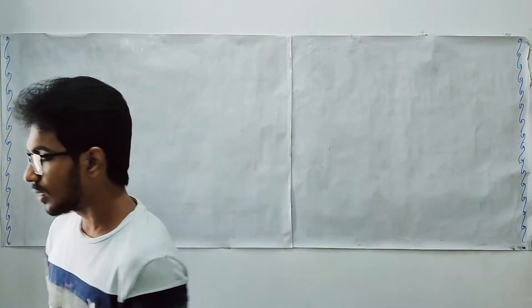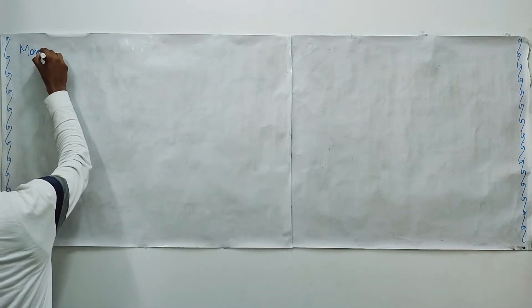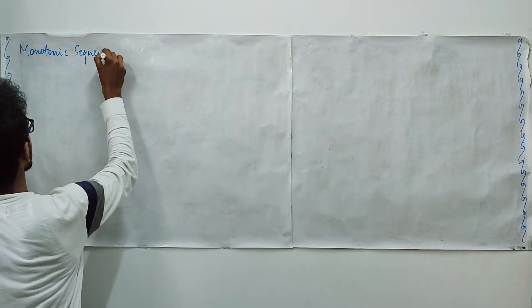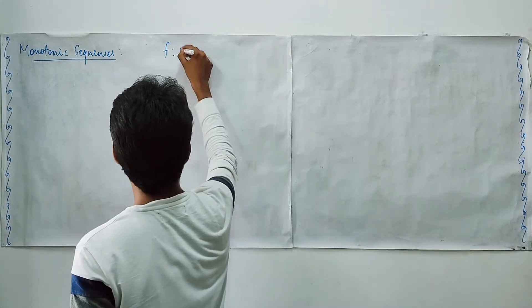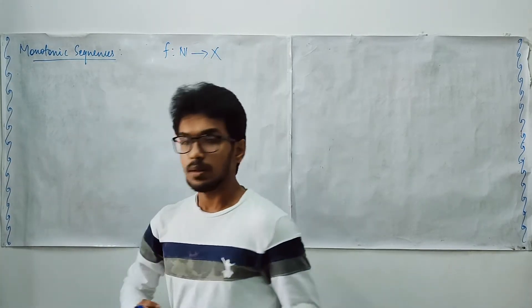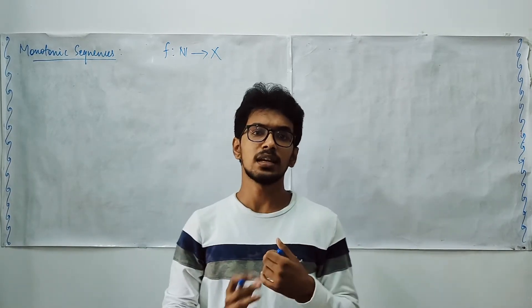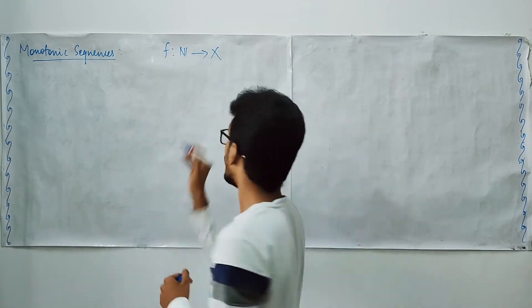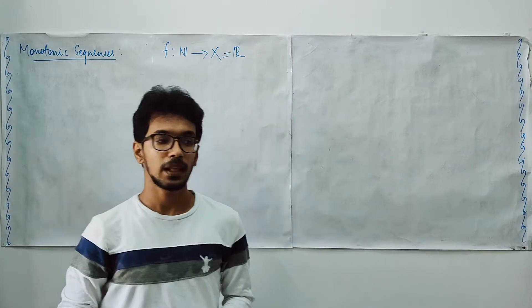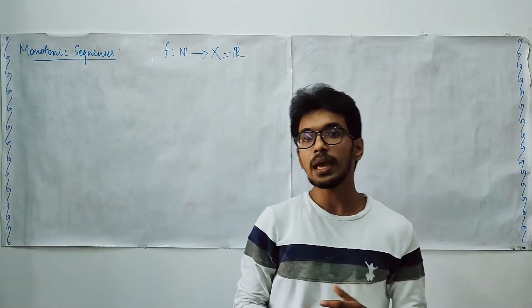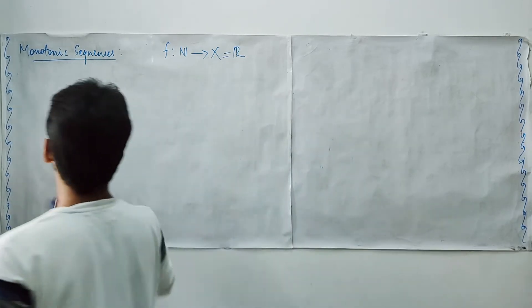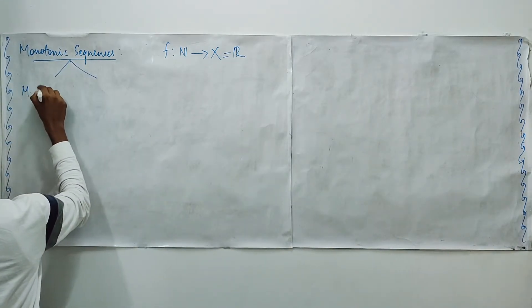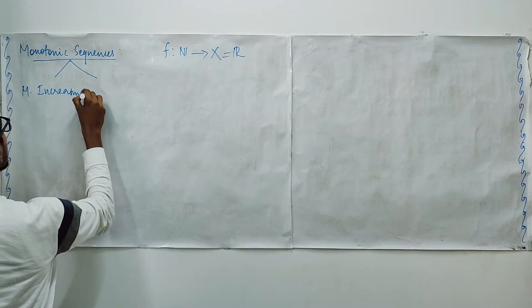Welcome to a course on sequence and series. In this lecture we are going to talk about something called monotonic sequences. A sequence is any mapping defined from the set of all natural numbers to any set, but when we talk about monotonic sequences we are restricting ourselves to sequences defined on the set of real numbers with standard Euclidean metric, because we are going to make a comparison between terms to define monotonicity. Monotonic sequences can be classified into two things: monotonically increasing ones and monotonically decreasing ones.